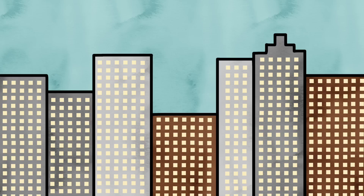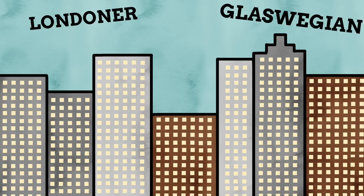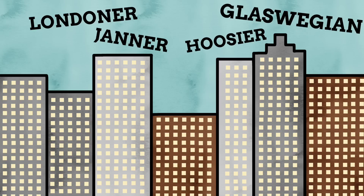While demonyms are most linked with countries, they can also be much more specific. There are specific demonyms for towns and cities, like Londoners for someone who comes from London, or Glaswegian for someone who comes from Glasgow. There are some more unique ones too, like Janna for someone from Plymouth, and Hoosier for someone from Indianapolis, which can be used for that entire state too.